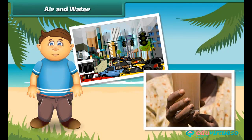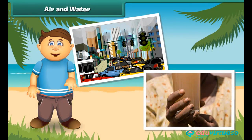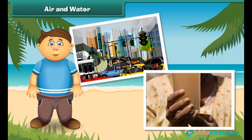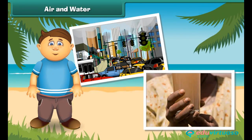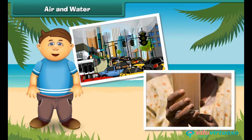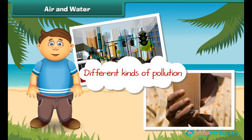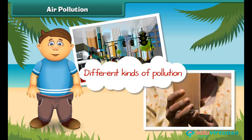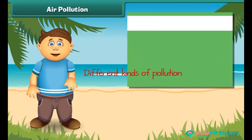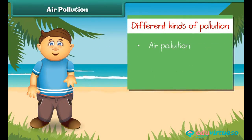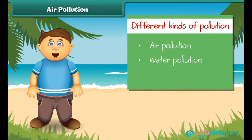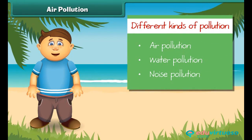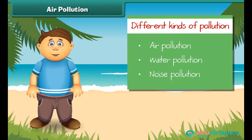Friends, as we all know, air and water mainly support life on the earth, but now these two are getting dirty day by day. As a result, there is no fresh air to breathe and clean water to drink. Pollution is mainly of three types: air pollution, water pollution, and noise pollution.